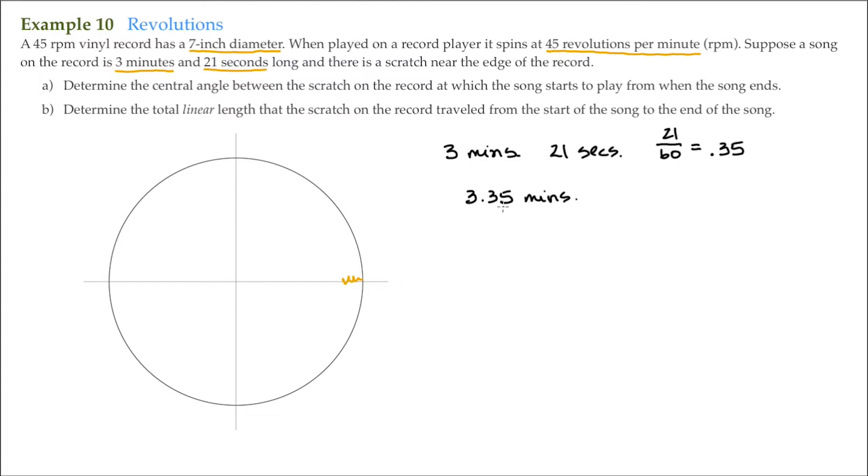So now if the song plays for 3.35 minutes, the record plays at 45 revolutions per minute. I'm going to go ahead and say 45 times 3.35 minutes. That comes out to be 150.75. So in other words, this record's going to spin 150.75 revolutions by the time this song starts to the time that it ends.